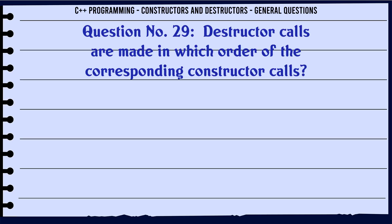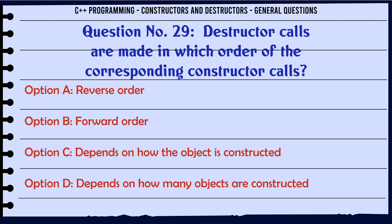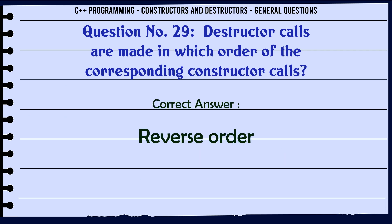Destructor calls are made in which order of the corresponding constructor calls? A. Reverse order. B. Forward order. C. Depends on how the object is constructed. D. Depends on how many objects are constructed. The correct answer is Reverse order.